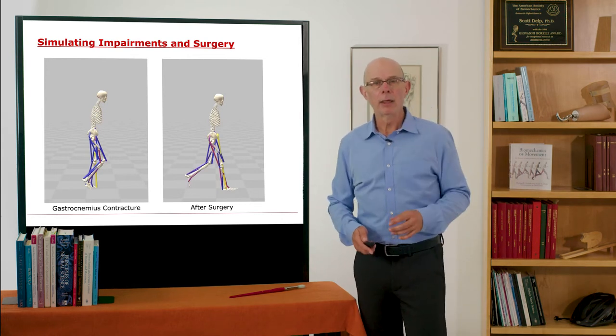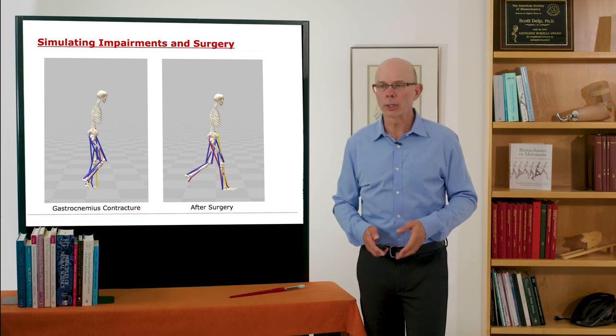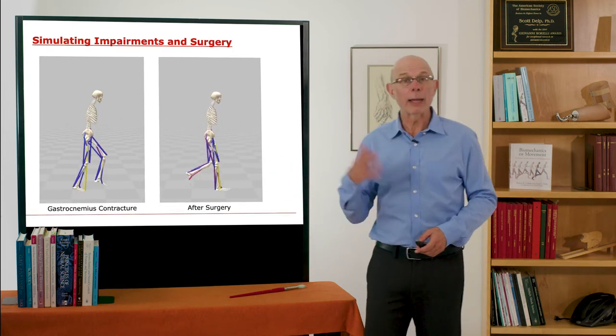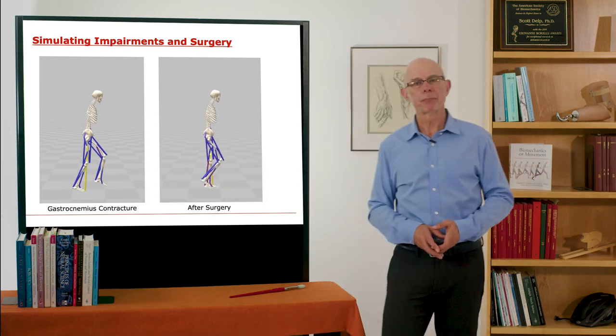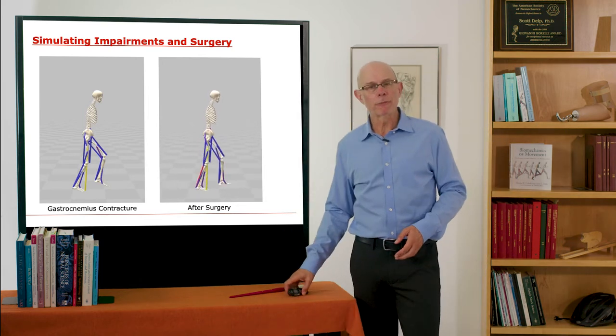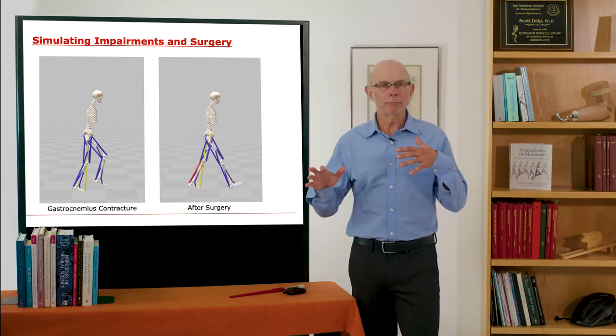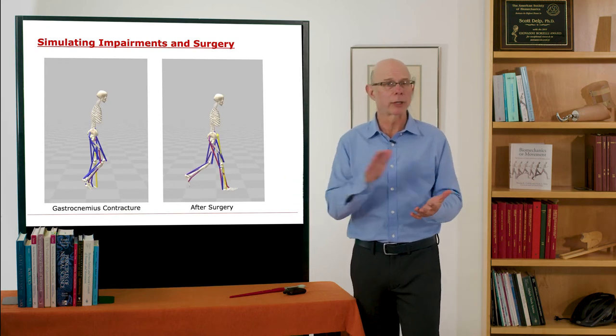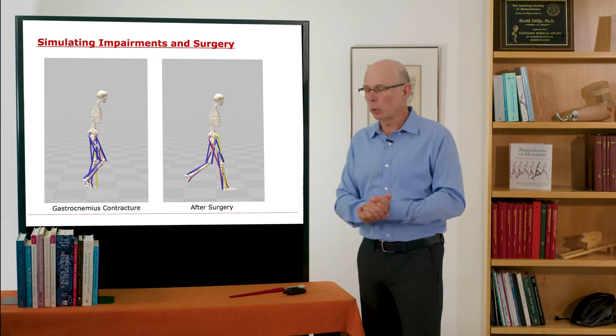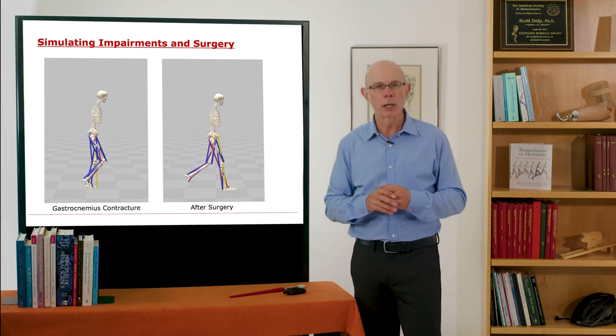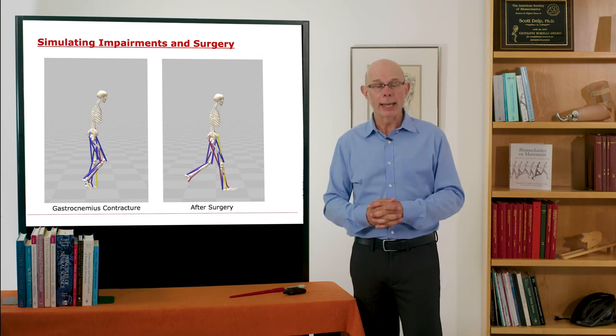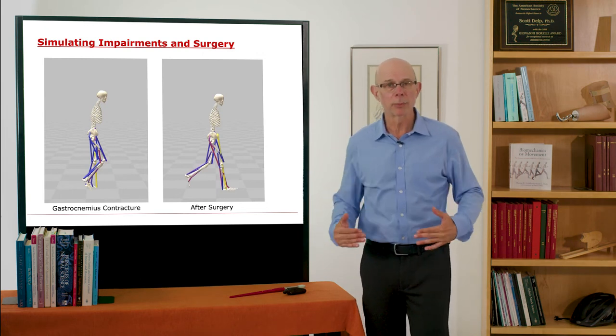We can simulate a surgery that might correct that, and you can see what the gait would be like after surgery. Now I mentioned before that we can't really simulate the nervous system perfectly, especially in an individual who's had a stroke or cerebral palsy. So we're cheating here a little bit. In the post-surgery analysis, we're assuming the nervous system is perfectly well controlled, and given that musculoskeletal system, this is the gait dynamics that we would observe.